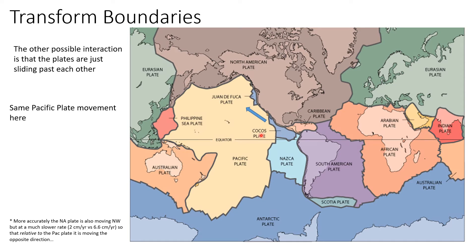The Pacific plate is sliding northwest. I've simplified this a lot because the North American plate isn't actually going southeast, but we're going to talk about it as if it is, because relative to the Pacific plate it is sliding southeast. So as a simplification, we're going to talk about the relative motion of these two plates being transform — where the Pacific plate is sliding this way and the North American plate is sliding that way.